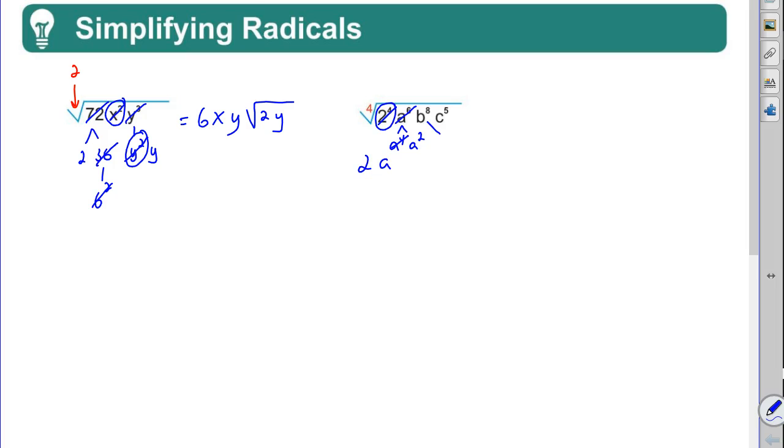My b - let's think of that as a b to the 4th times another b to the 4th. Right? So I get a b out for that b to the 4th and a b out for that b to the 4th for a b squared.